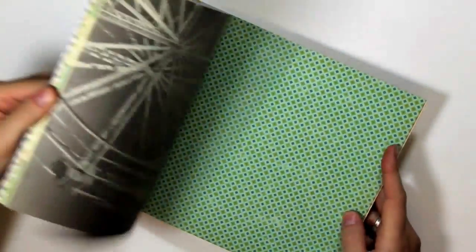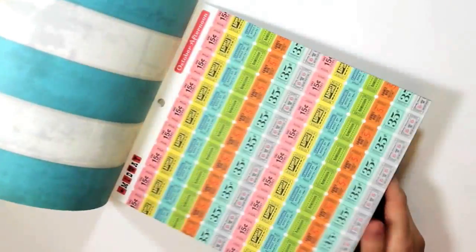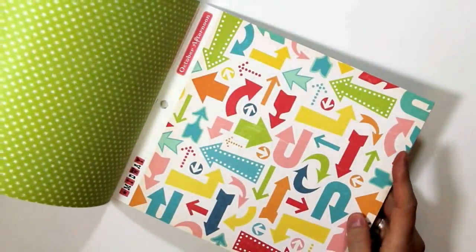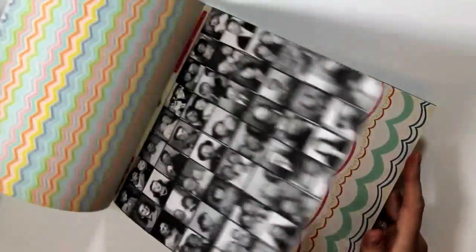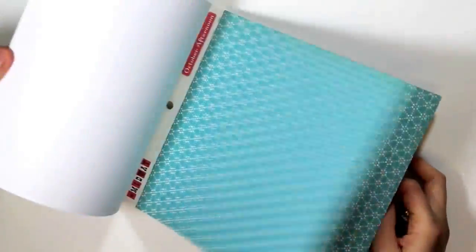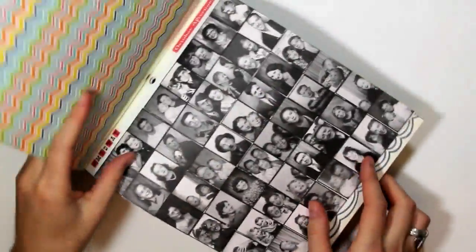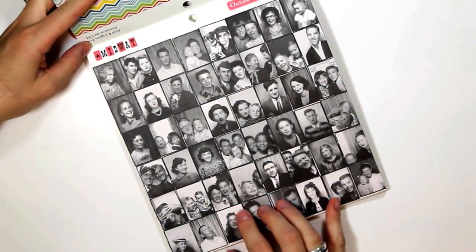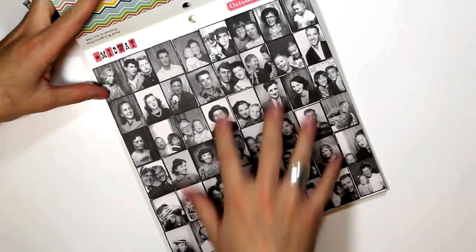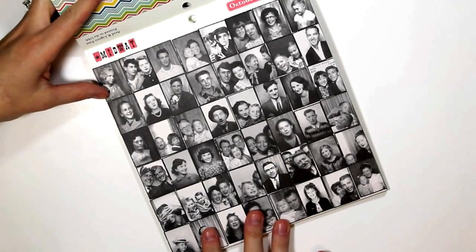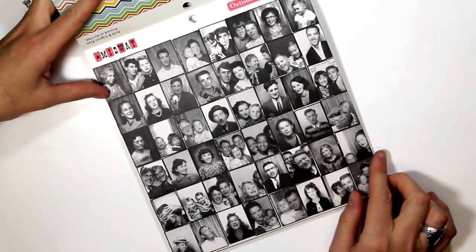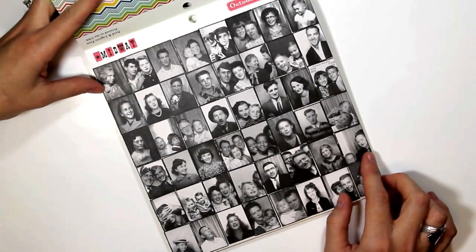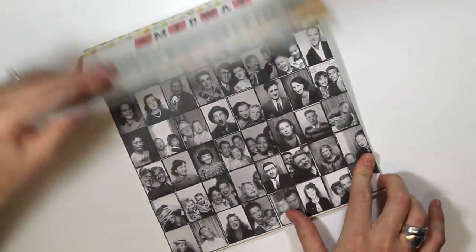As you can see, this 8x8 paper pad is full of really great prints and patterns, but there was one particular piece of paper that seemed a little bit tricky to find a good use for. This particular piece of paper is full of different vintage photo booth style pictures, and that is where the inspiration for this card came from. I decided to challenge myself and find a way to use this piece of paper to its fullest.